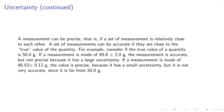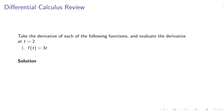A measurement can be precise. That is, if a set of measurements is relatively close to each other. A set of measurements can be accurate if they are close to the true value of the quantity. For example, consider if the true value of the quantity is 50 grams. The measurement is made of 49.8 plus or minus 2 grams. The measurement is accurate but not precise because it has a large uncertainty.